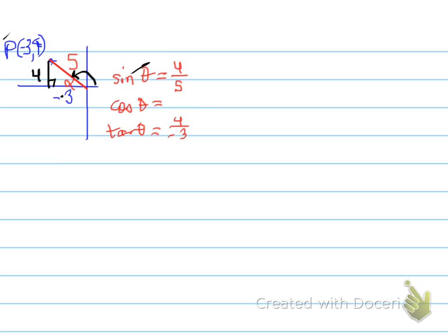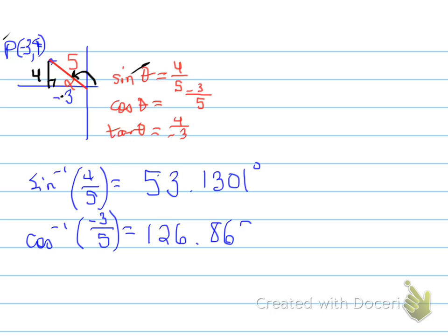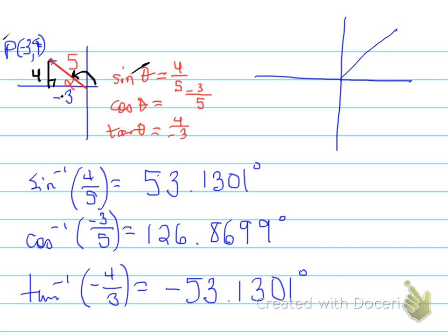Now, if I took the sine inverse of four over five, I would get the value 53.1301. If I took the cos inverse of negative three over five, I get 126.8699. And finally, the tan inverse of negative four over three, and I get a third different value. Which one of these answers is right? Most of you are thinking that the cos inverse is right. But how do you know? Here is the trick, or what you need to remember,